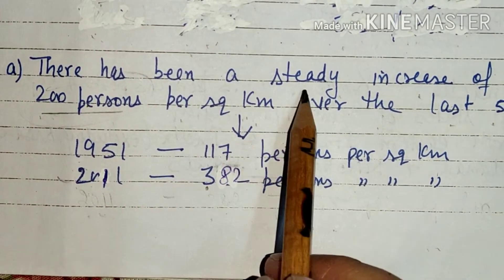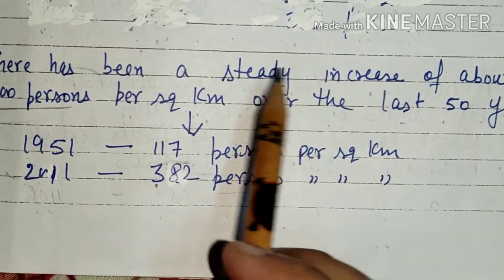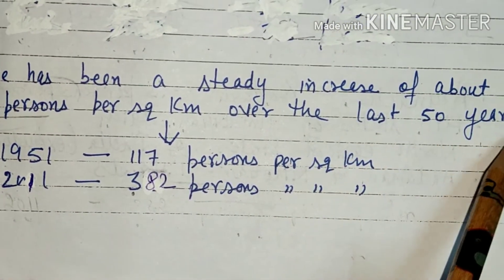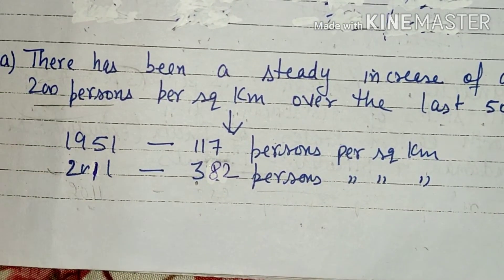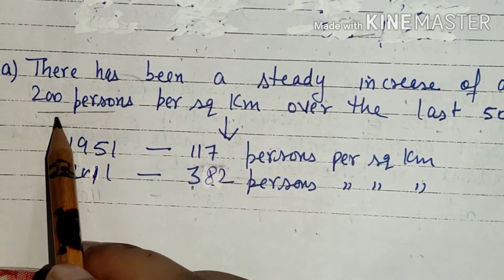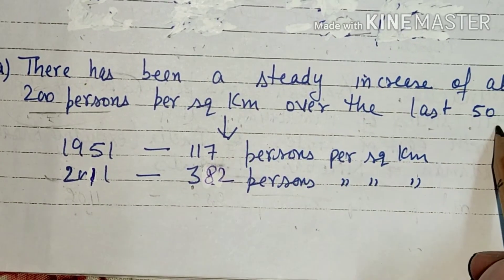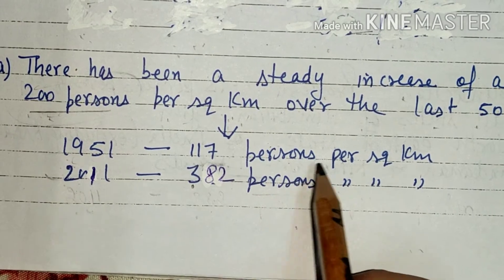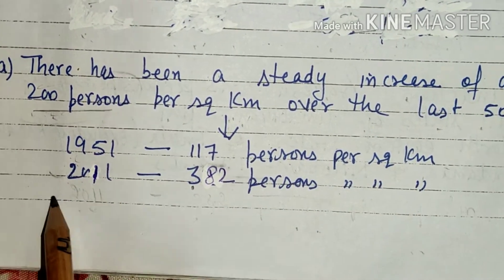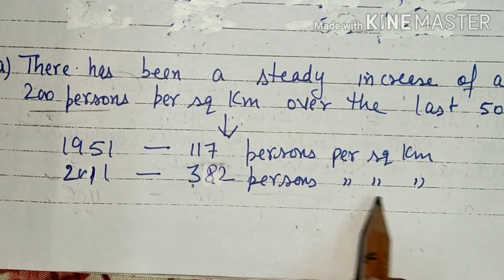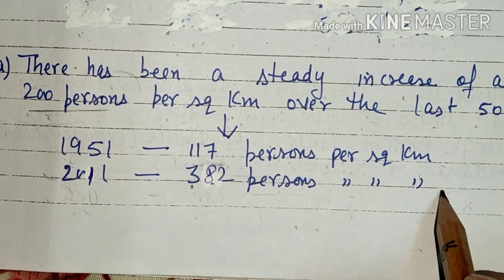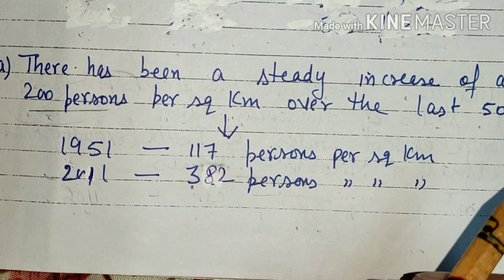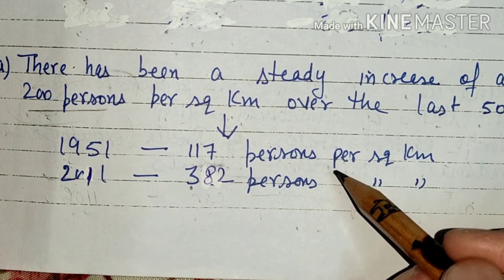There has been a steady increase of about 200 persons per km² over the last 50 years. In 1951, it was 117 persons per km², and by 2011 it had risen to 382 persons per km².